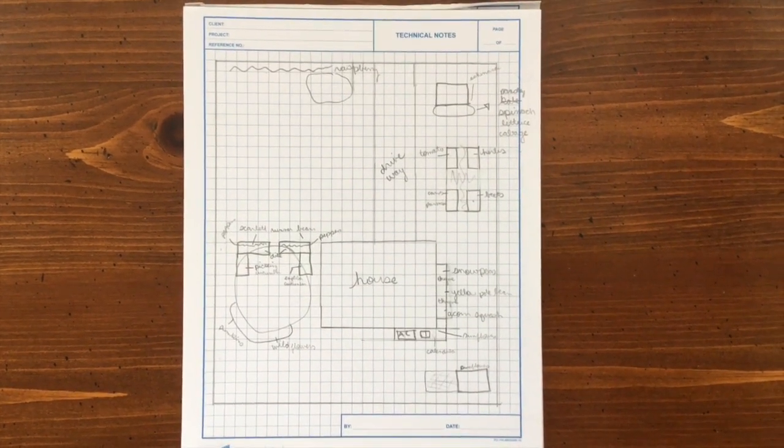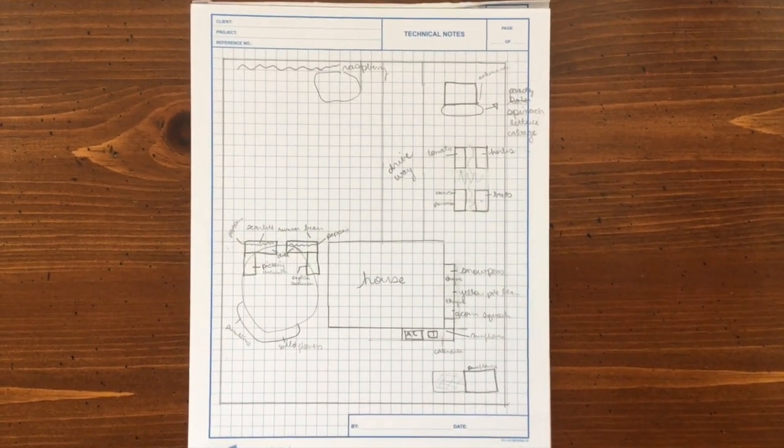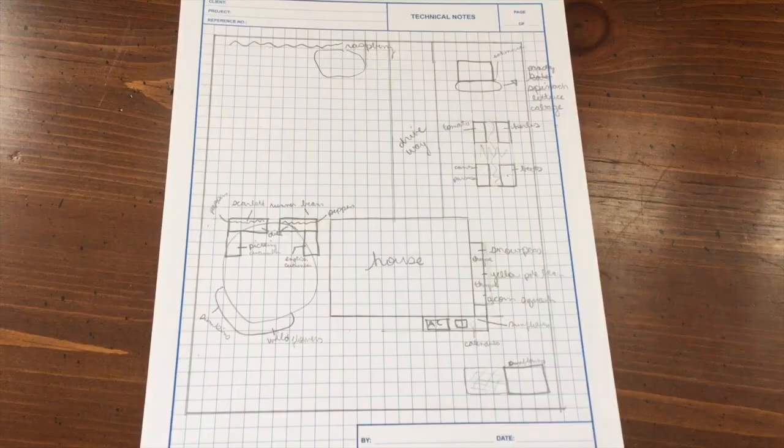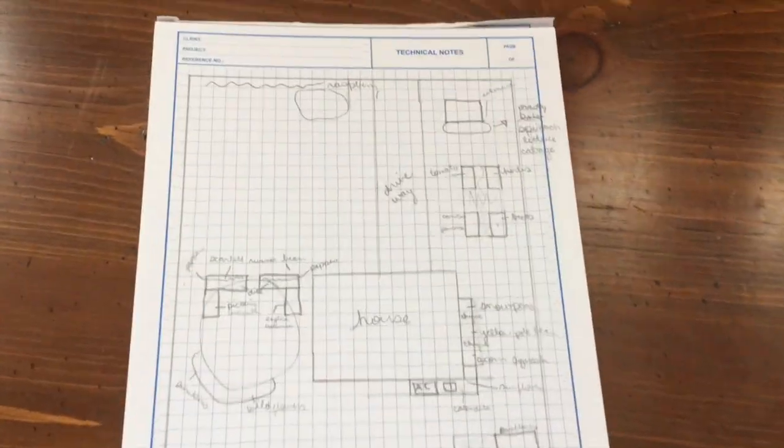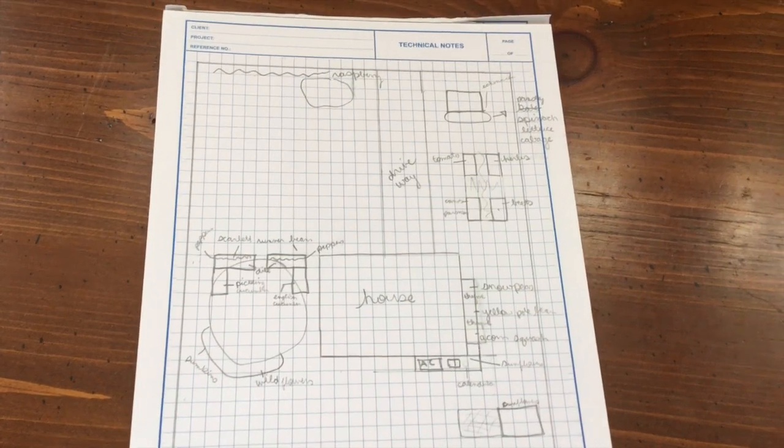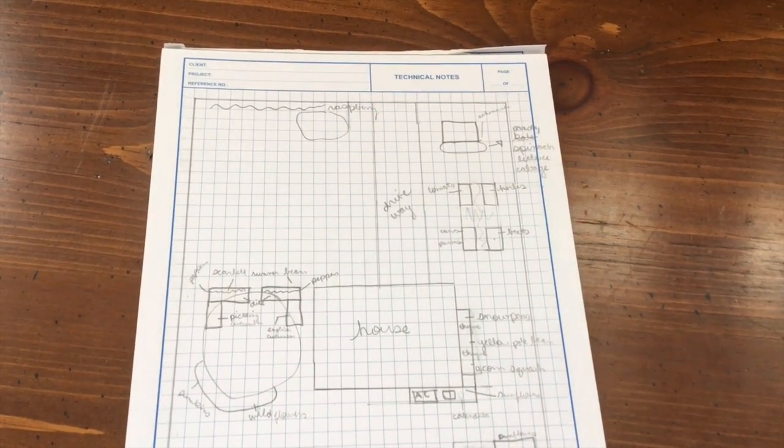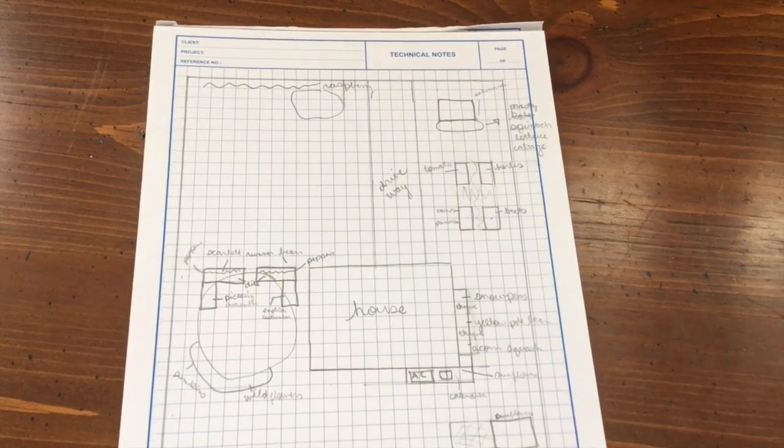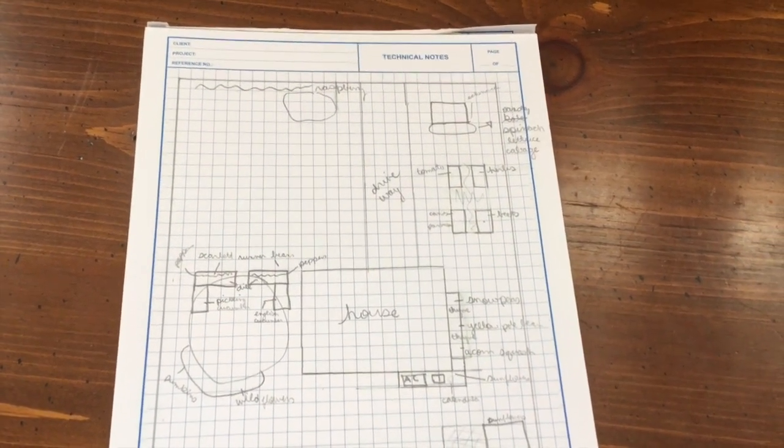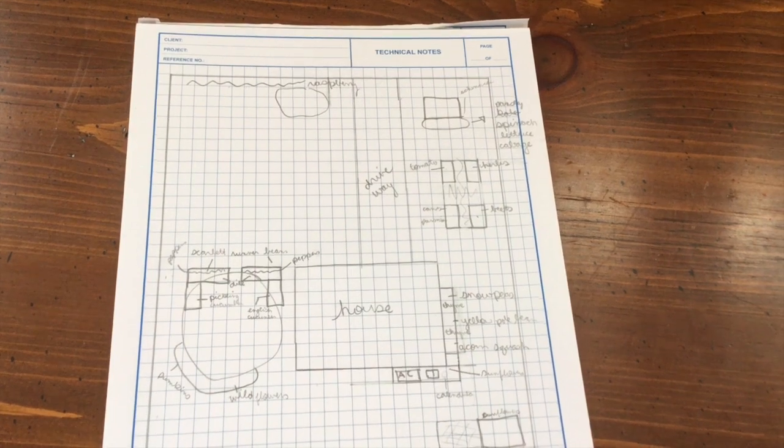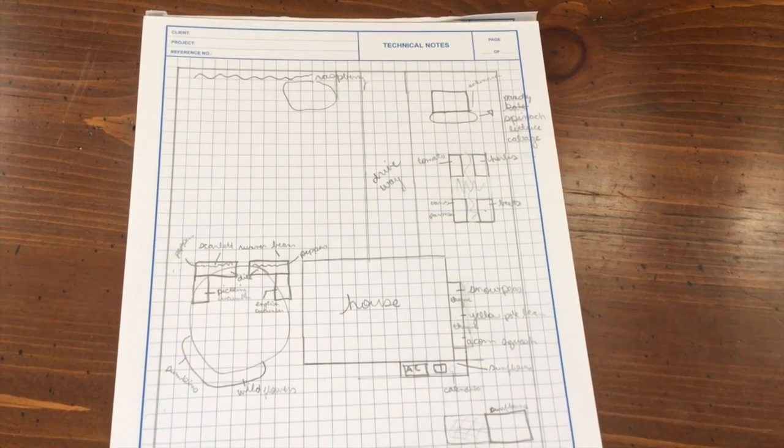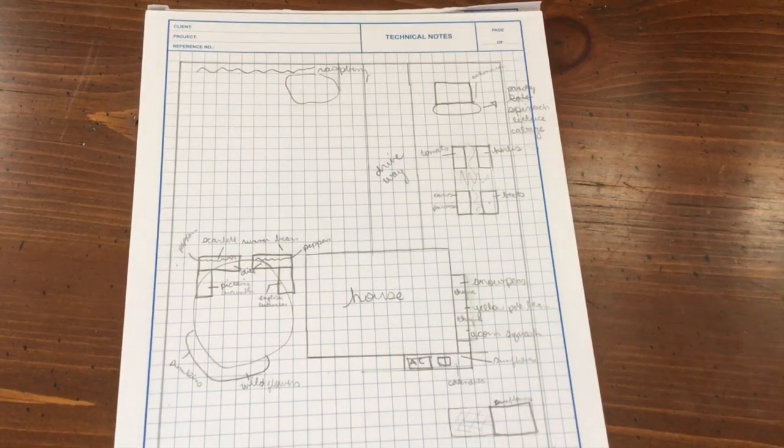So let's get started. This is a not-to-scale drawing of our property. We've got an acre. There are several gardens already here when we moved in. Some of them have been converted into veggie areas, but some of them do remain flower gardens just because it's easier that way.